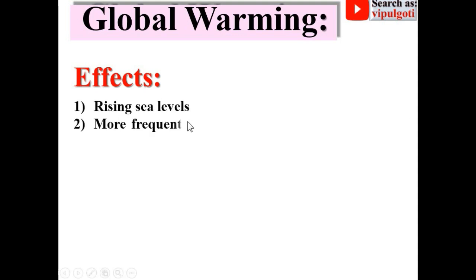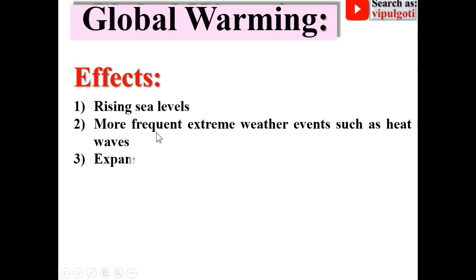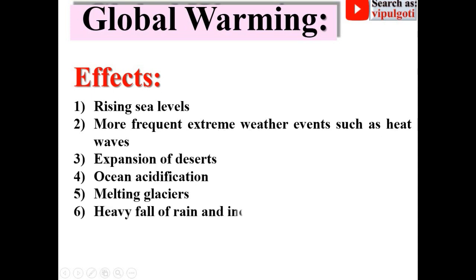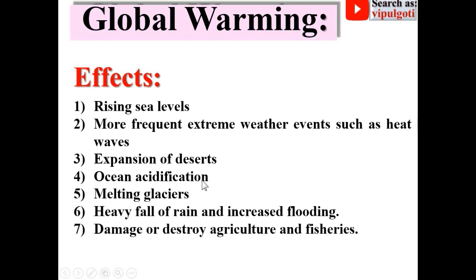The effects of global warming include: first, rising sea levels; second, more frequent extreme weather such as heat waves; third, expansion of deserts; fourth, ocean acidification; fifth, melting glaciers; sixth, heavy rainfall and increasing flooding; and seventh, damage or destruction of agriculture and fisheries. These are the important effects due to global warming.